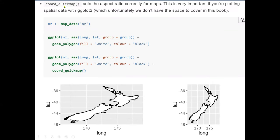Also, we can use coord_quickmap. This normally will set the aspect ratio correctly for maps. So this is very important to set the aspect ratio for the maps. This is very important if you are plotting spatial data with ggplot, which unfortunately, we don't have the space to cover in these lectures or the book we are using. For example, here we have MapData NZ.